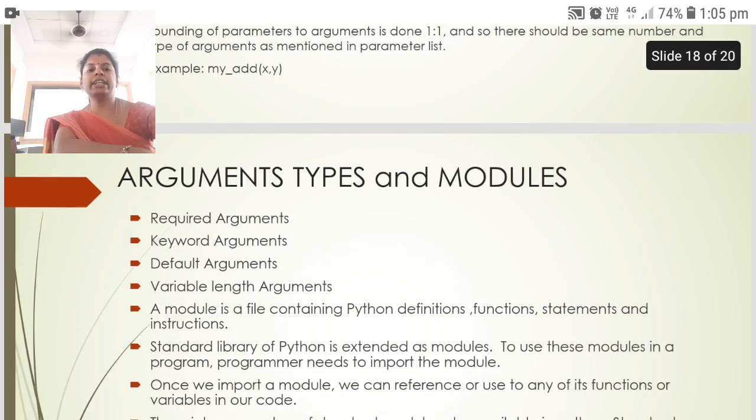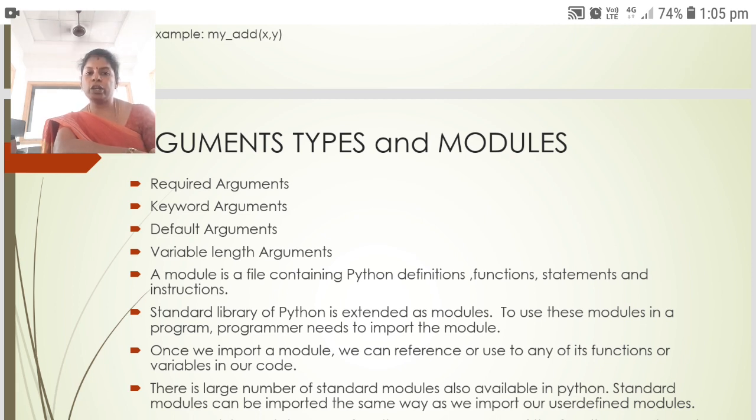The next is argument types and modules. Required arguments, keyword arguments, default arguments and variable length arguments are the types of arguments. The module is a file containing Python definitions, functions, statements and instructions. We have standard library of Python is extended as modules.